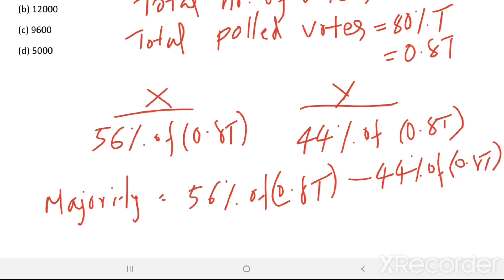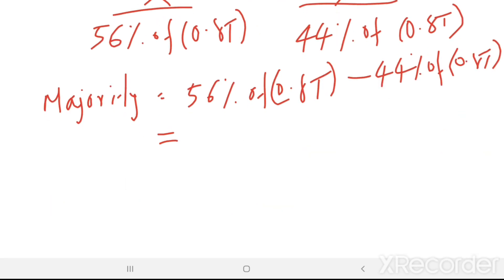We get 12% of 0.80T. This is equal to 1440.